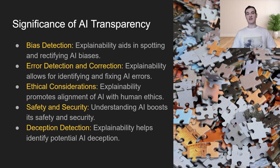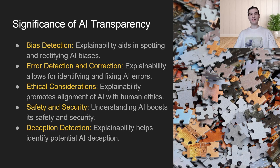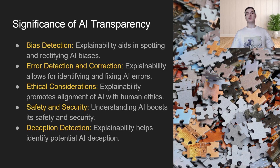Finally, is deception detection. This ties in with the ethical considerations in that sometimes these models knowingly lie to us. A good example of that would be the Snapchat LLM, which intentionally lies sometimes. So what if there are certain neurons or structures of neurons that activate when the neural network is intentionally lying? That would be really good for us to know so that we can take measures to proactively prevent that in the future.